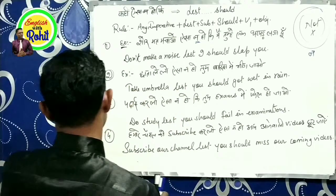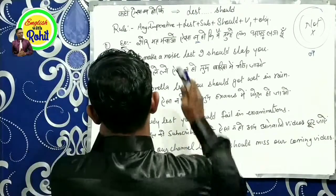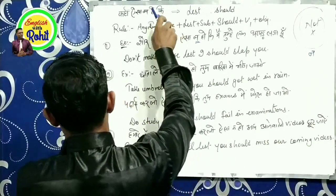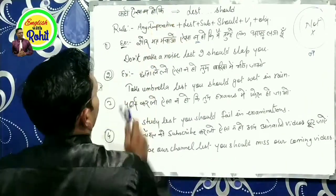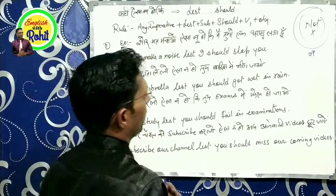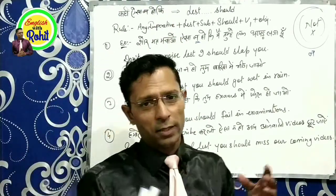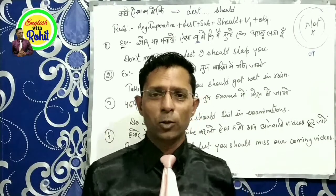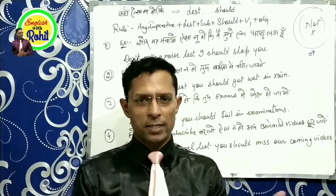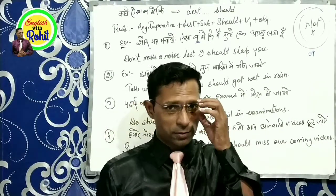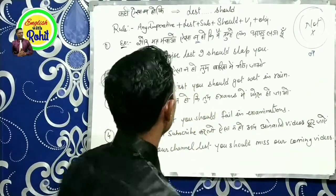Last or should का क्या मतलब होता है? कहीं ऐसा ना हो की — यानी Last or should का मतलब है 'कहीं ऐसा ना हो की' या 'ऐसा ना हो की'। ठीक है?